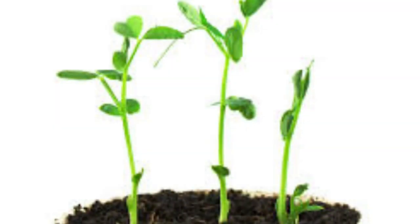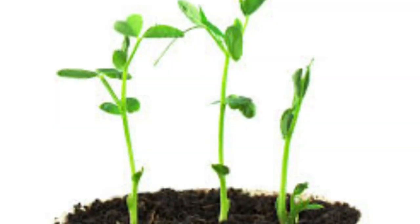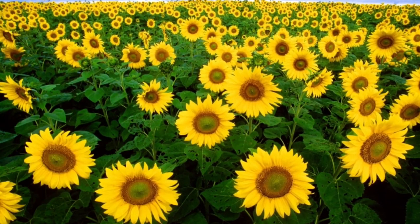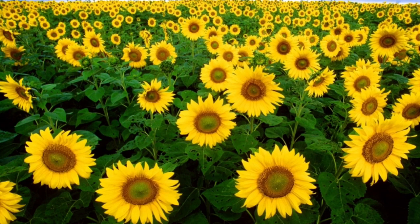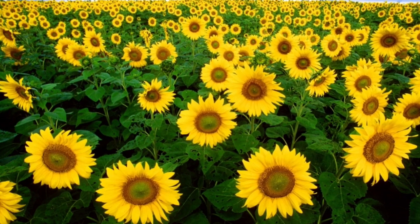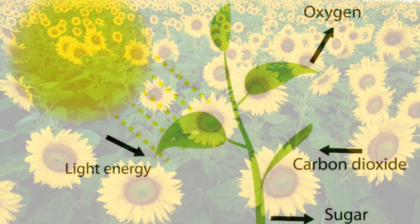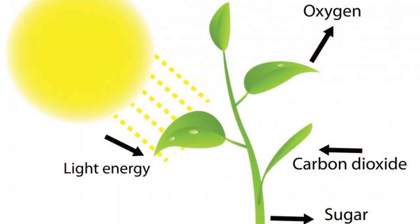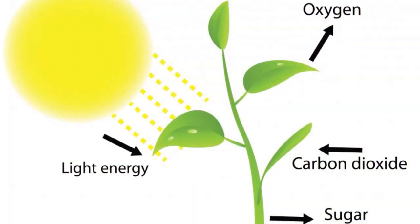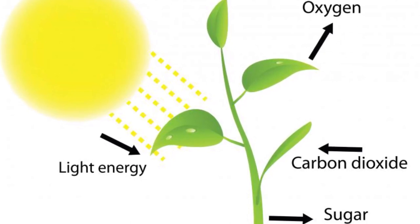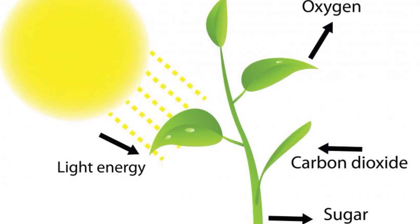These plants are growing upward towards the sun for a process called photosynthesis. Some flowers have an ability called heliotropism, in which they face towards the sunlight to make photosynthesis more efficient for them. Photosynthesis is essential to a plant — it takes in light energy from the sun and CO2 from what we exhale, and as a result it produces oxygen for us to breathe and sugar for itself.